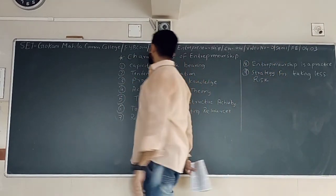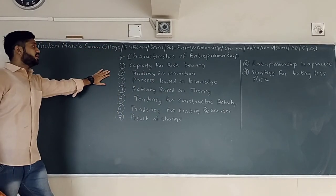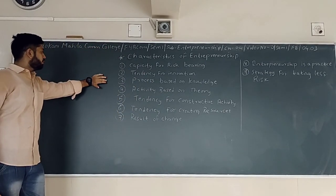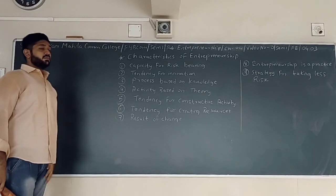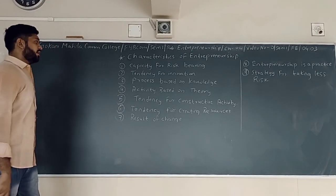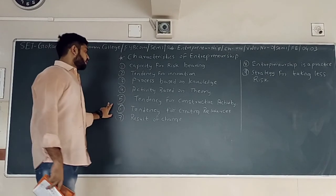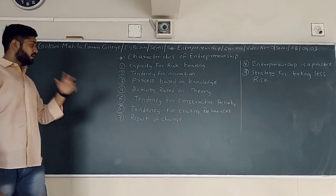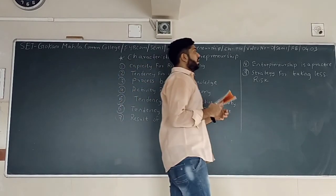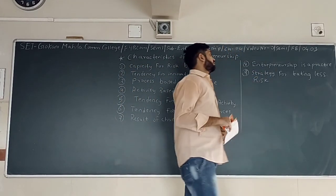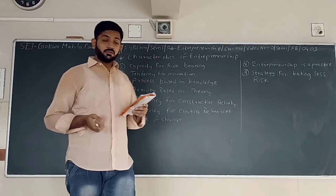So the person should make a strategy to take as little risk as possible so he does not suffer from loss. The strategy for taking less risk. So the first one is capacity for risk bearing, second tendency for innovation, the third is process based on knowledge, fourth is activity based on clearing, fifth is tendency for consultative activity, next is tendency for creating resources, seventh is result of changes, eighth is entrepreneurship is a practice, ninth is strategy for taking less risk. Number ten point follows.